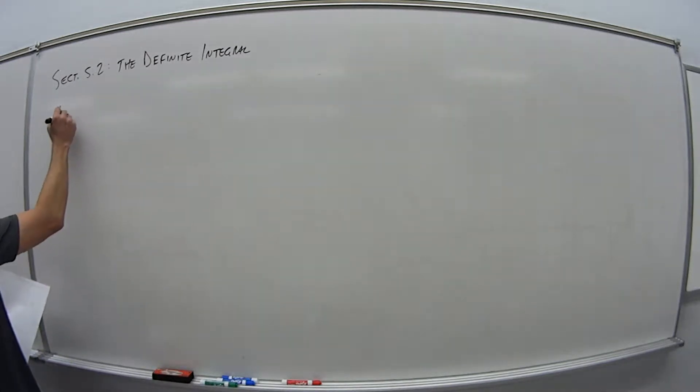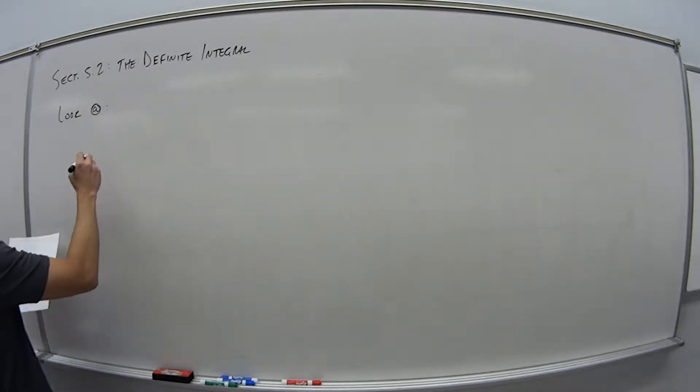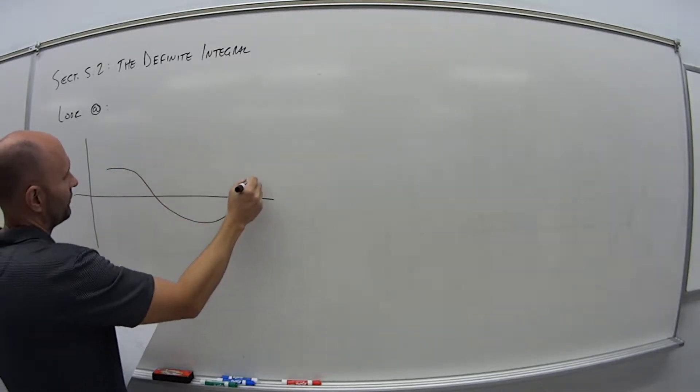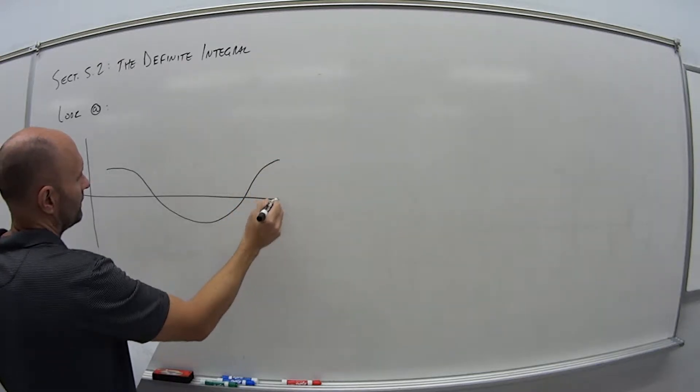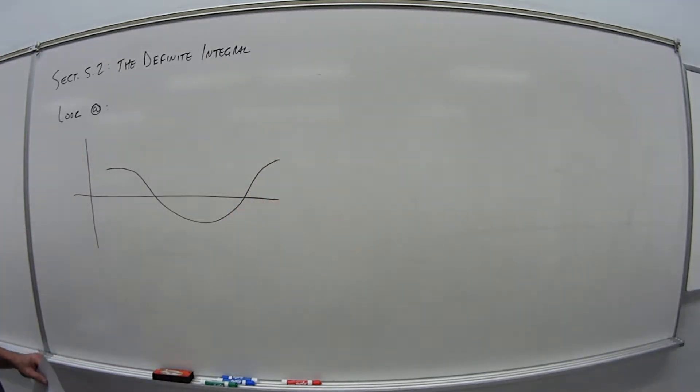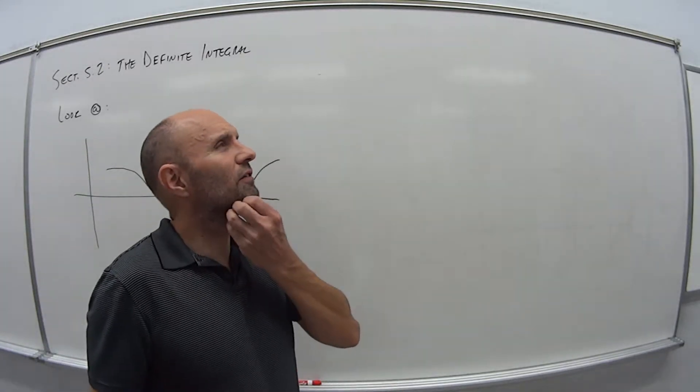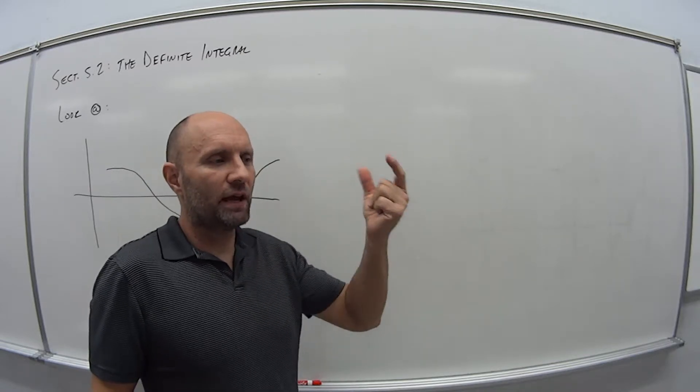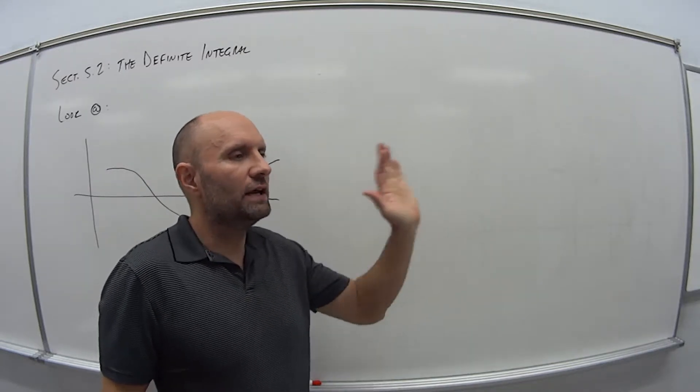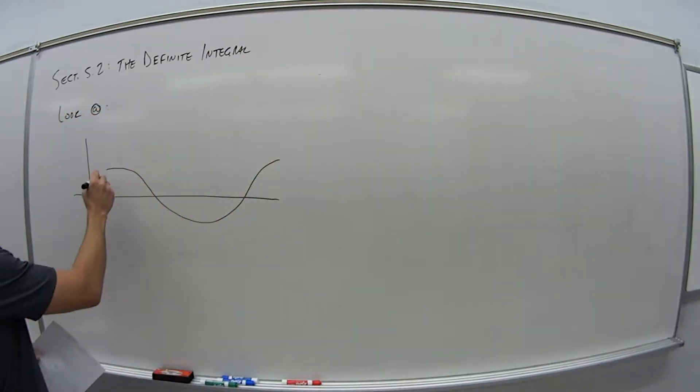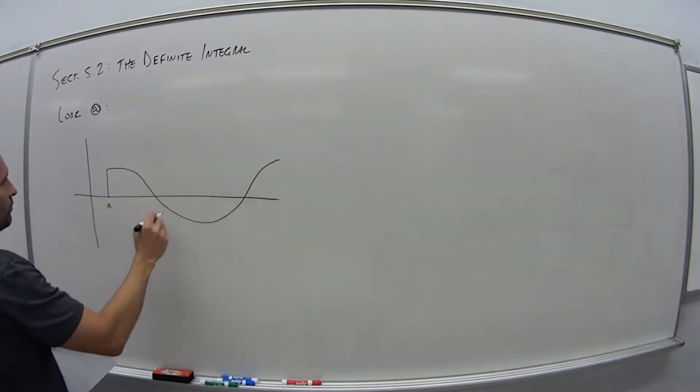So let's look at the following curve. Let's say we have a function, then it comes down below. So maybe almost like a sine or a cosine function, something like this. So in section 5.1, we are taking all those rectangles underneath the curve, adding them up. That was giving us the area under the curve.